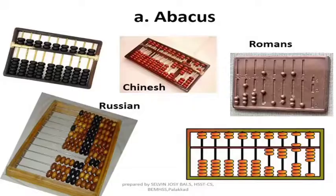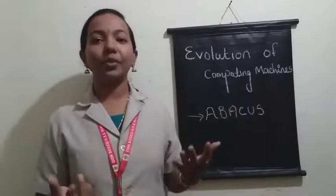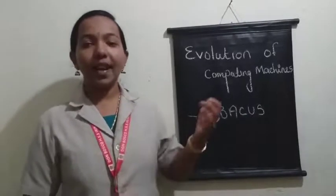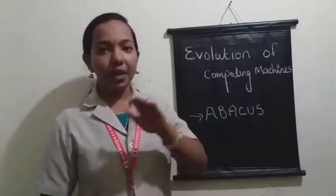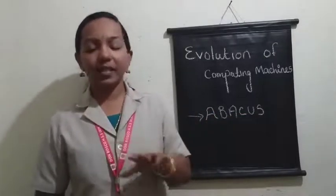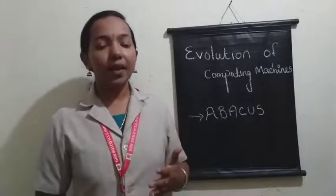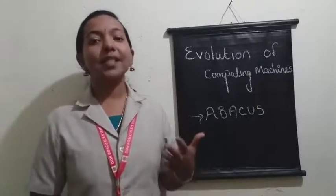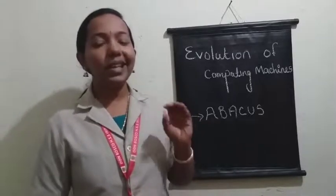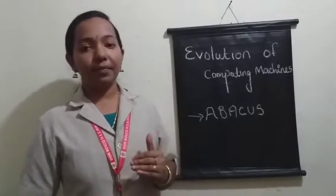Abacus is also known as a calculating tool. The word Abacus means calculation, or it is used for calculating purposes. Abacus contains different rows, and each row contains 7 beads. A horizontal divider is used for separating the beads — top 2 beads and bottom 5 beads. Abacus works based on the place value system. Each top bead represents a place value of 5, and each bottom bead has a place value of 1.